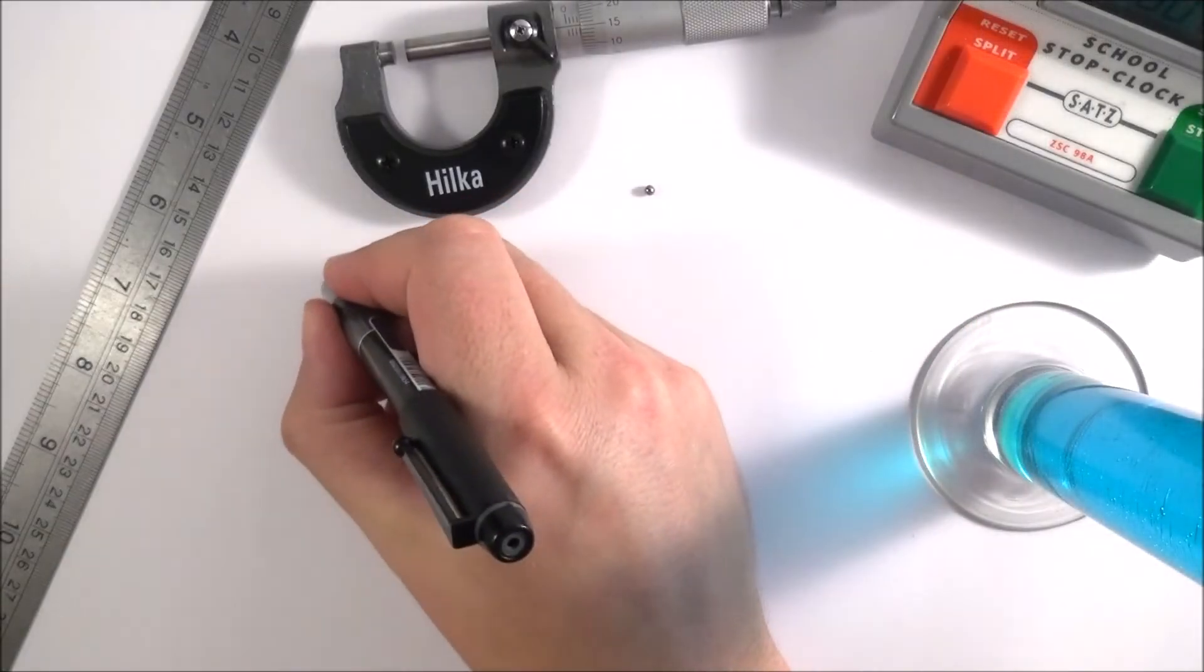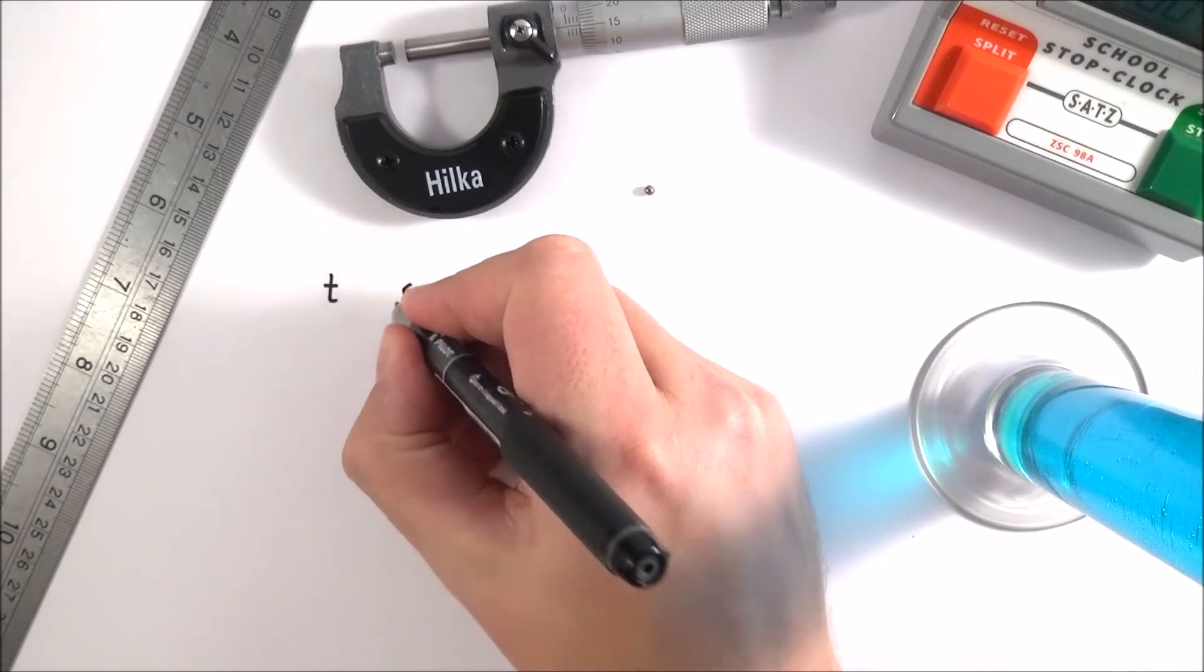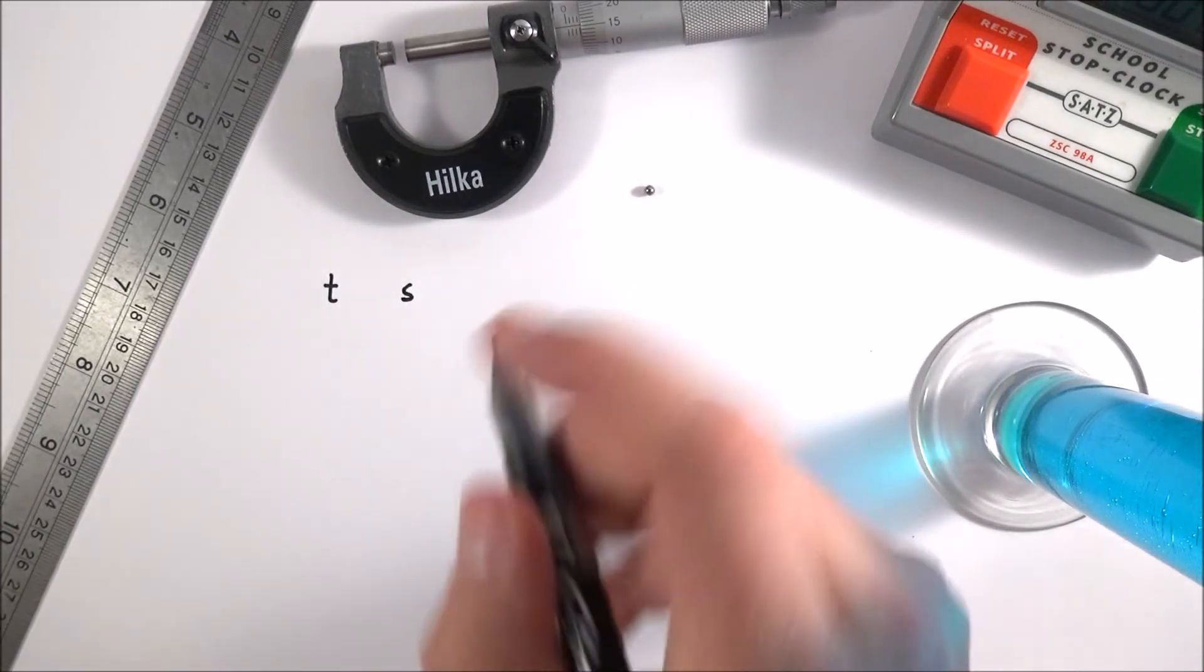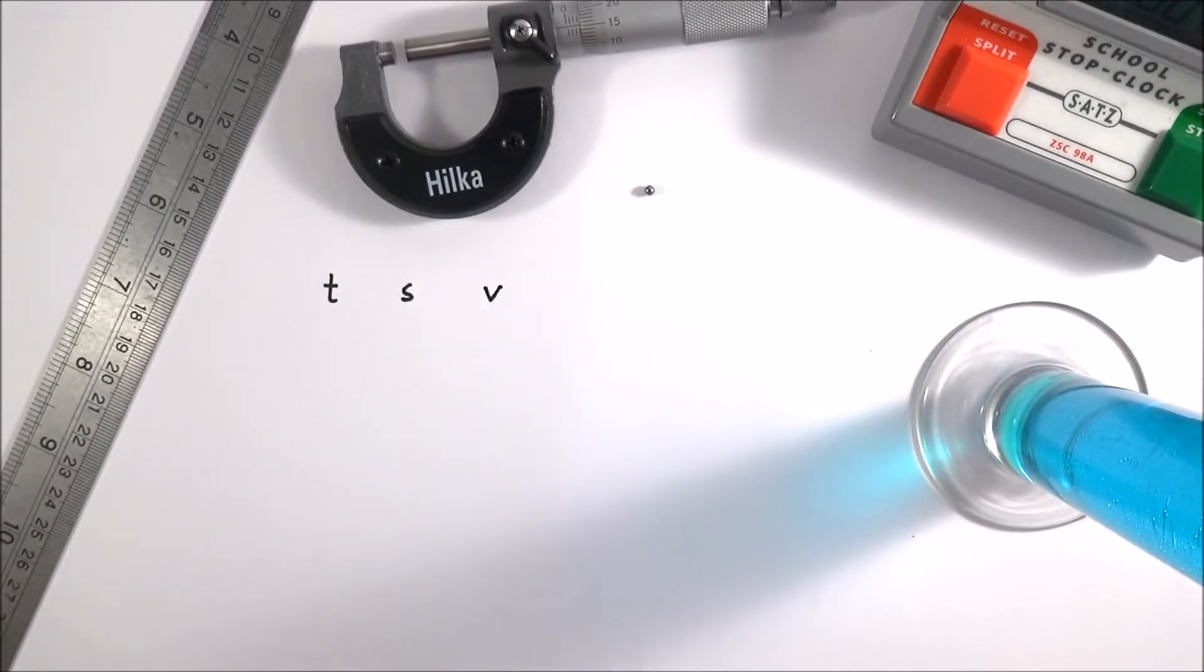So for this experiment, what you might be doing is looking at the time. You maybe look at the distance traveled or the displacement down vertically, and from this you can then work out the velocity at different times. Again, making sure that you do your repeat readings and all the good stuff.